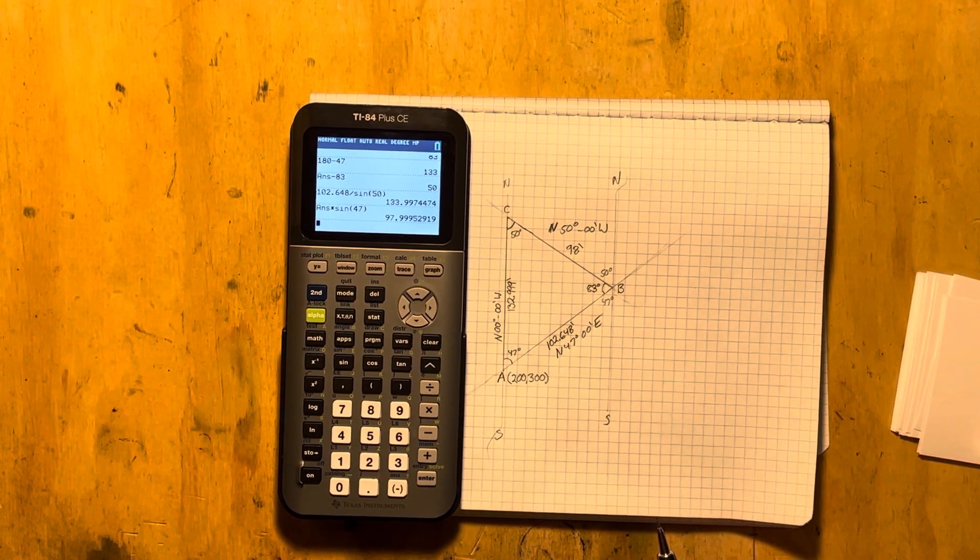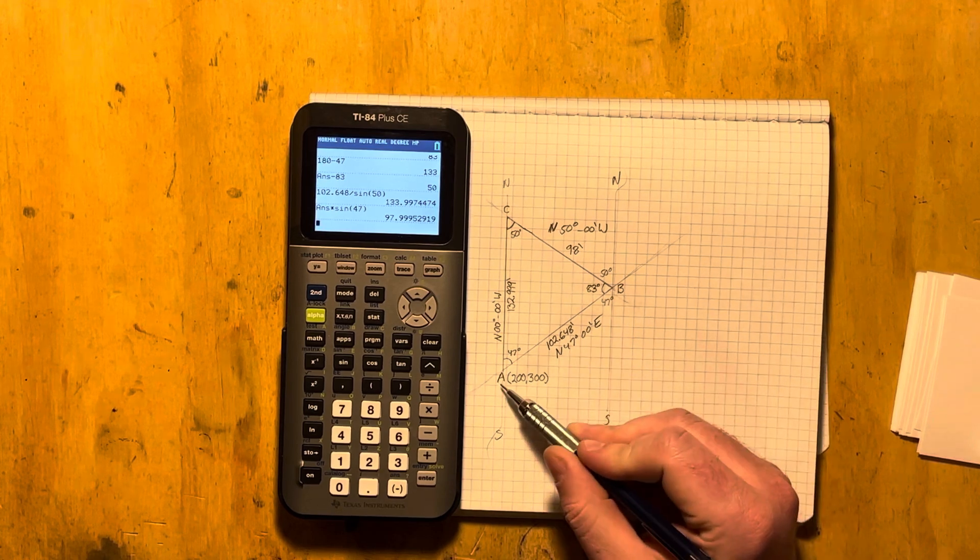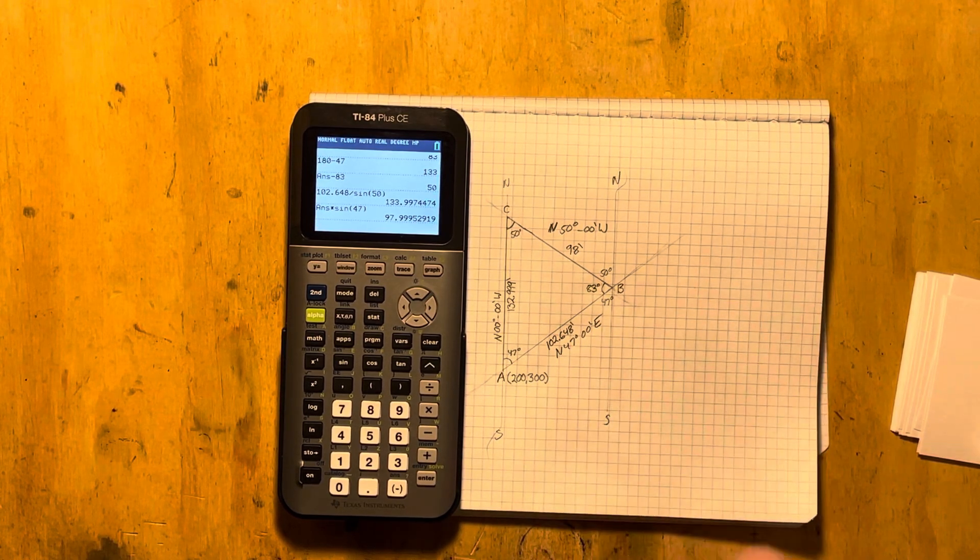Bearing north, 50 degrees west. And the bearing down here of line AB is going to be north, 47 degrees east. Simple as that.